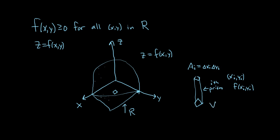So the volume of the i-th prism, I'll call v sub i, is going to be f of x sub i, y sub i times a sub i. Instead of calling it a sub i, we could call it delta a sub i. So v sub i equals f of x sub i, y sub i, delta a sub i. This is the height of the prism and this is the area of the rectangle. So the height times the area gives you the volume of the prism.